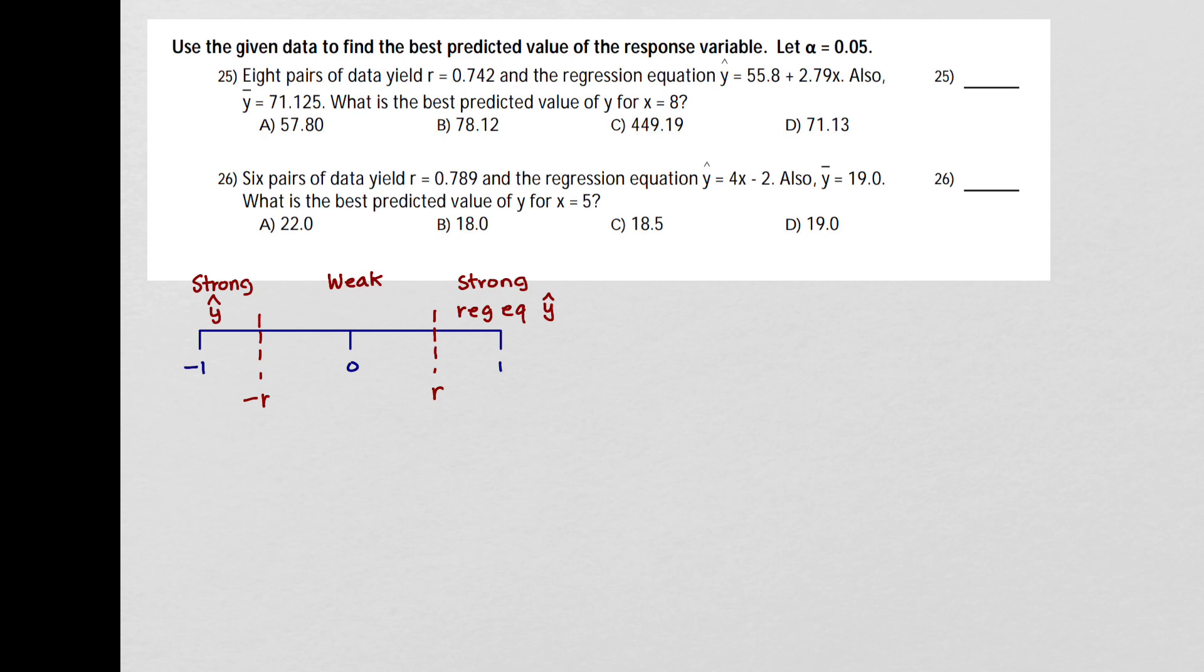And then if there is a weak relationship, that's where we use the value of y bar, which is the mean of the y values. And we just say, well, if you want me to predict a value of y, the best thing I can do if there's no linear relationship is to say what the mean of the y values is.